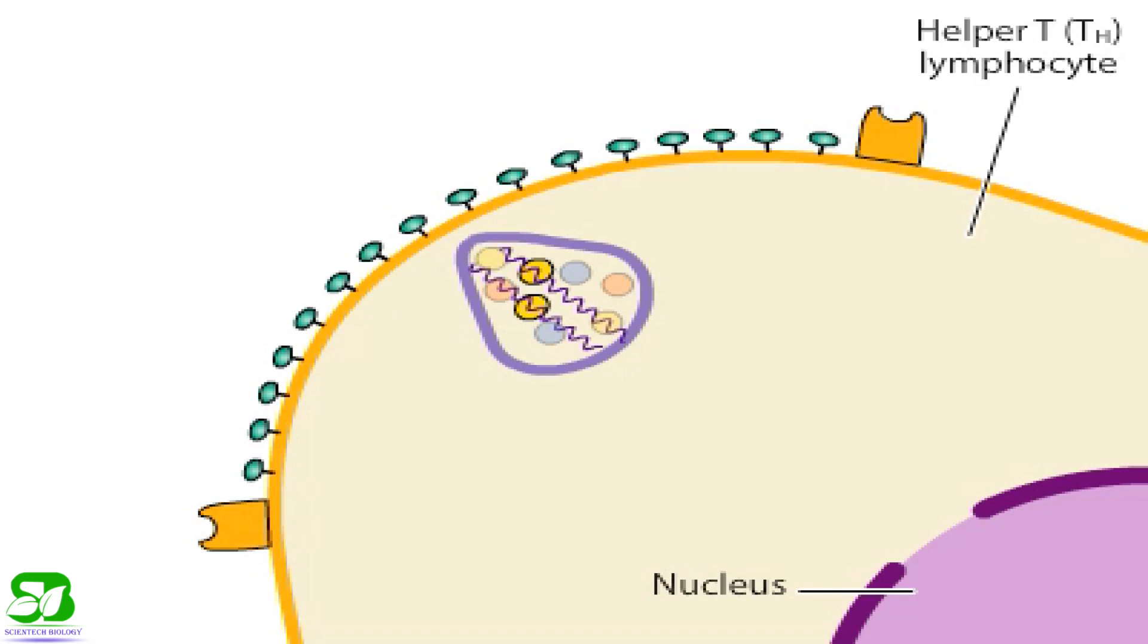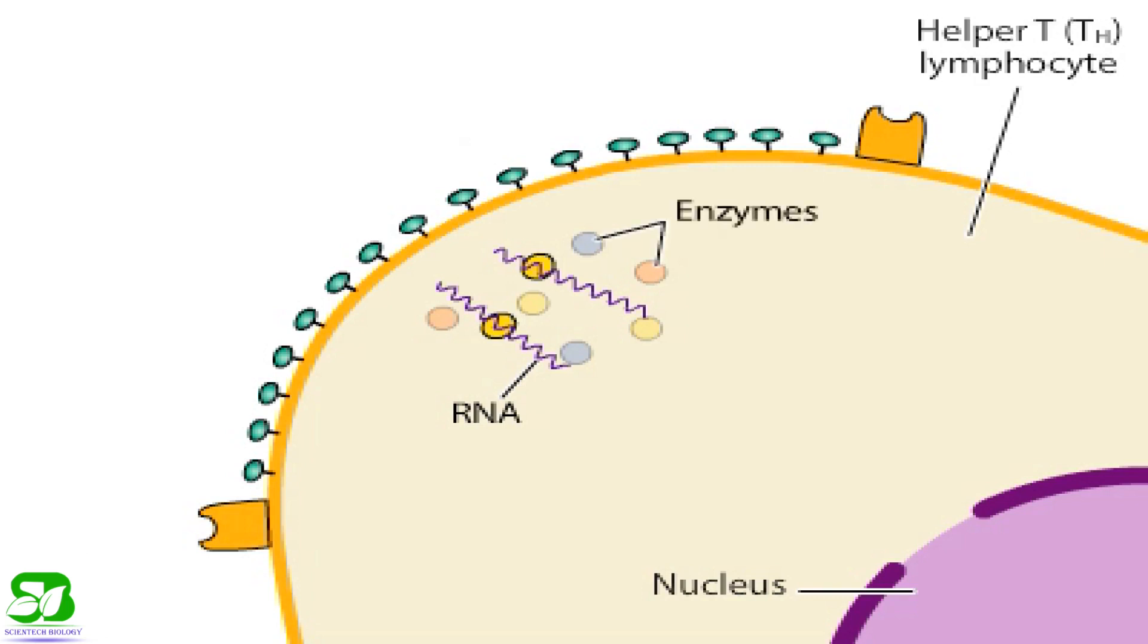During entry, the core uncodes allowing the viral genetic material, which is RNA, to enter the cytoplasm. In addition to RNA, the virus carries enzymes that participate in the first few stages of viral replication.